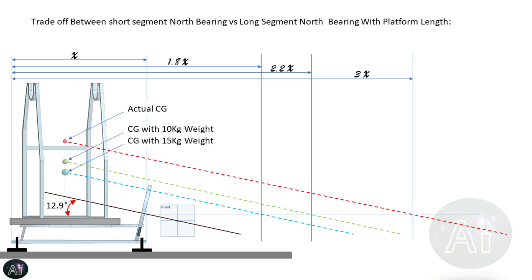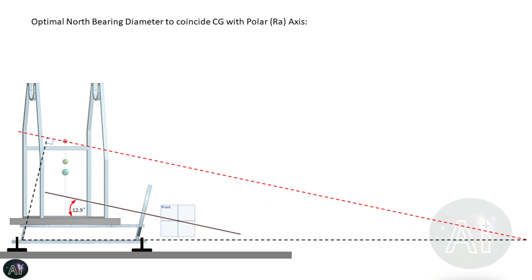Now in our previous design we had seen that we had designed it for a latitude of 12.9 degrees north and the latitude was passing way below the center of gravity. We also saw that it led to a smaller north bearing which was causing a probability of center of gravity going out of the balancing plane and thus a risk of toppling over.